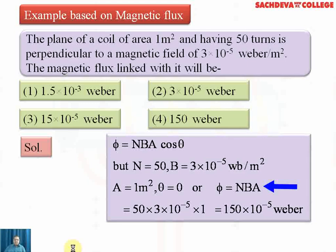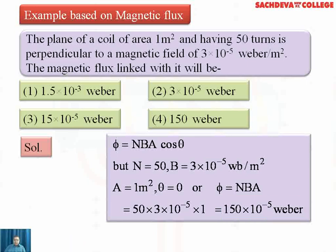The net formula becomes φ = N·B·A. Computing the values: N=50, B=3×10⁻⁵, A=1, the result becomes 150×10⁻⁵ Webers. This matches the correct option, which is 150×10⁻⁵ Webers.